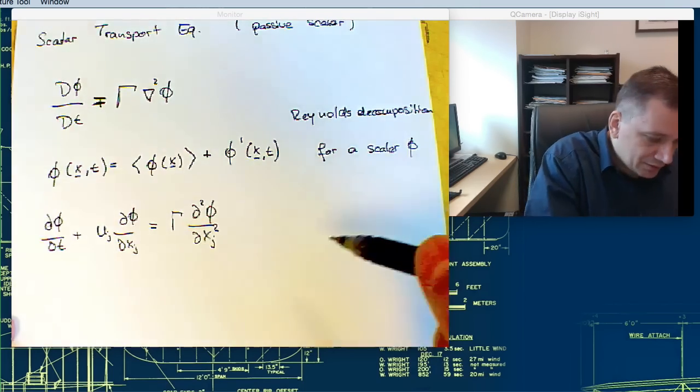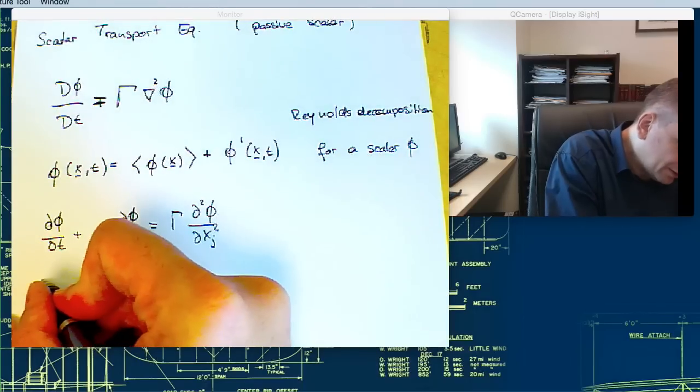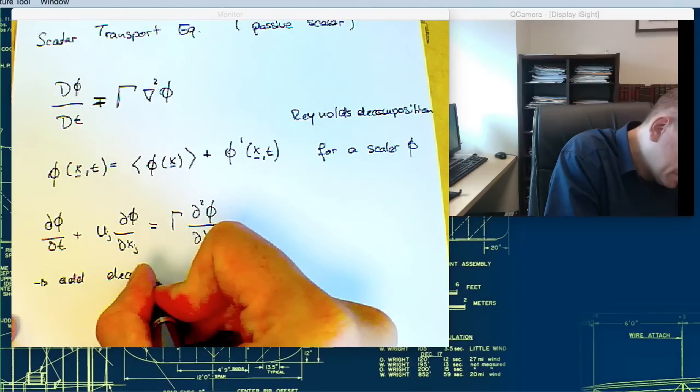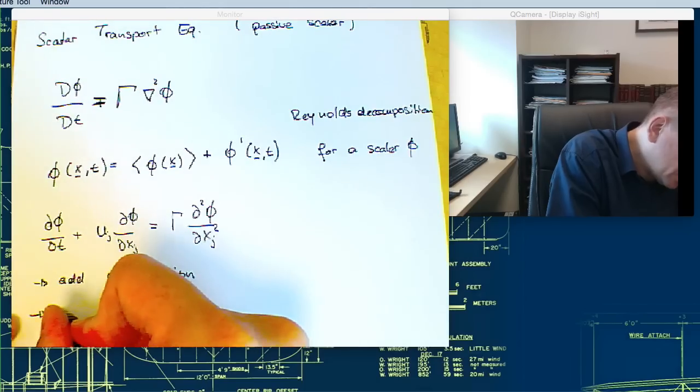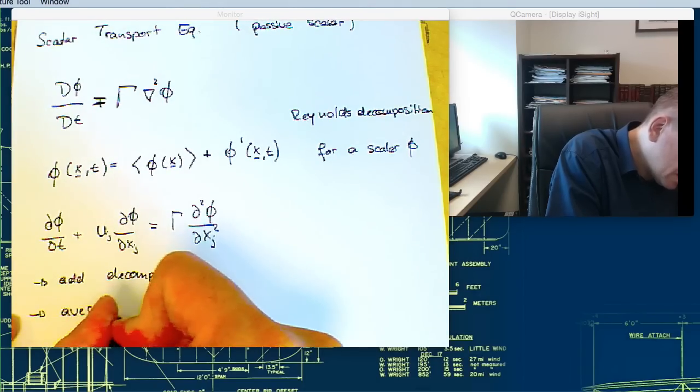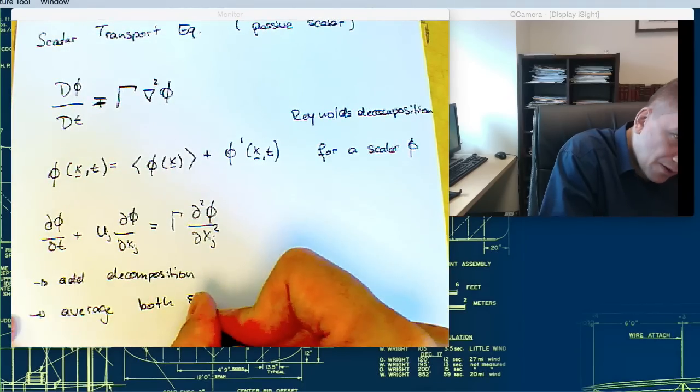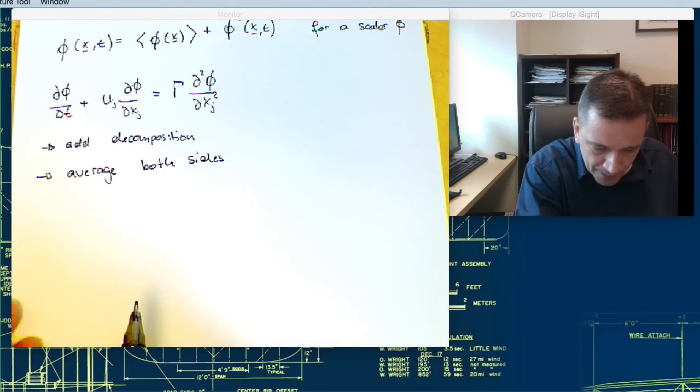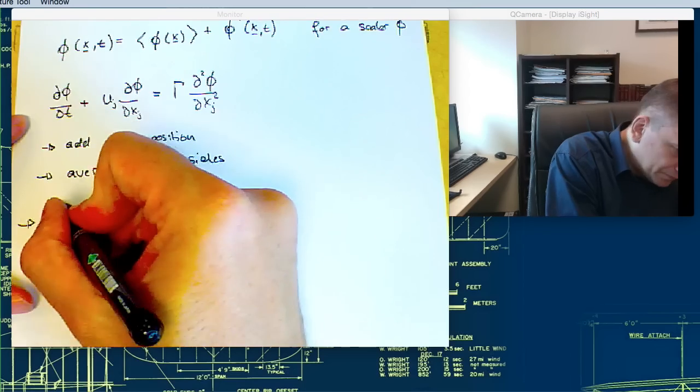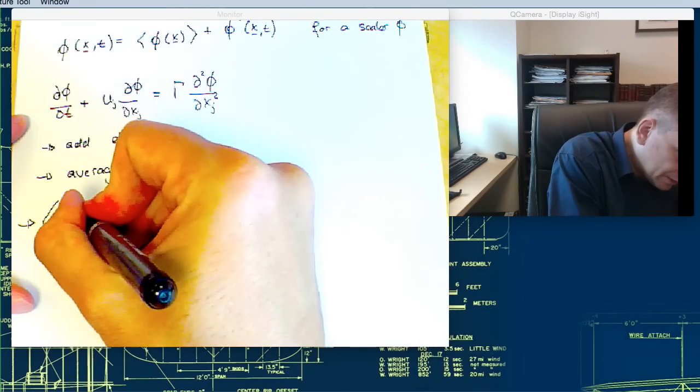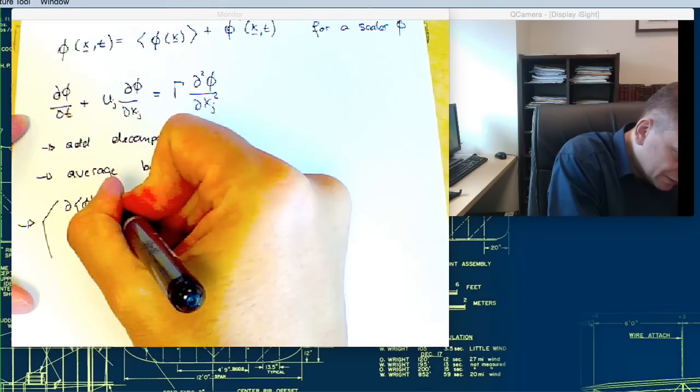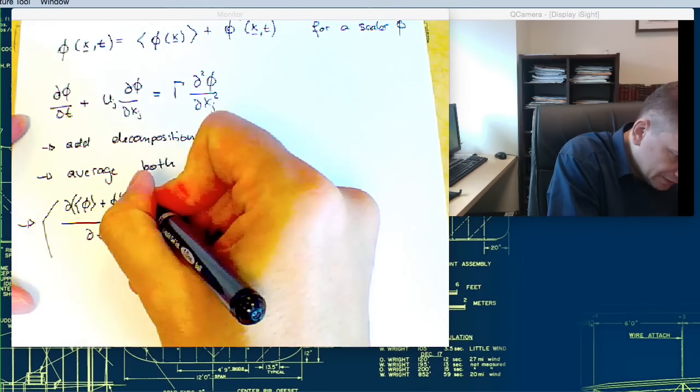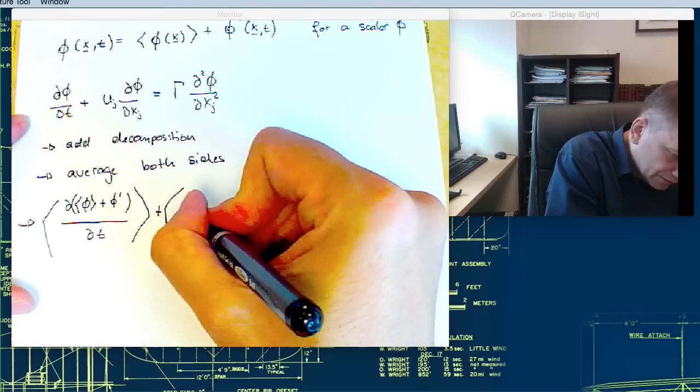We put in the decomposition and average both sides. What you get then in index form is ∂(φ + φ')/∂t plus (u_j + u_j') ∂(φ + φ')/∂x_j